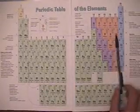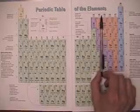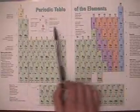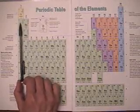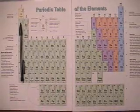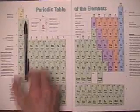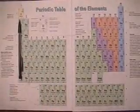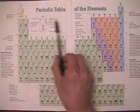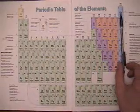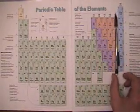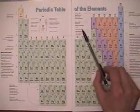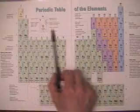The vertical columns — like where my pencil is here — are called groups or chemical families. Specifically they have certain names: these are the alkali metals, these are the alkaline earth metals, slide all the way over to here you have noble gases, halogens, and chalcogens.